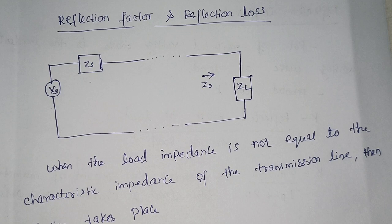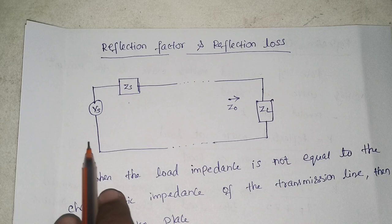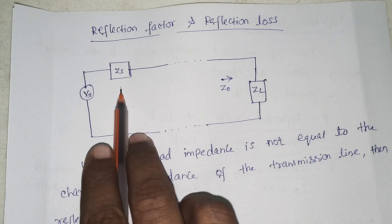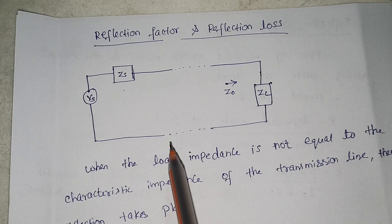Dear students, in this lecture we are going to view the concept called reflection factor and reflection loss. Consider a transmission line where at the source end we have source voltage, the source impedance is mentioned as Zs, at the receiving end we have load impedance, and Z0 is the characteristic impedance. So this is a normal transmission line.